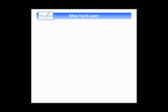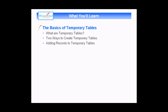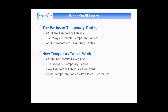We'll begin this session with a quick explanation of what temporary tables are. We'll then move on and show you two ways that you can use to create a temporary table and how you can add records to a table that you've just created. Once we've covered the basics we'll move on and show you a few of the more technical details of how temporary tables work. We'll show you where you can find a temporary table that you've created. We'll explain the scope of a temporary table and how you can extend it by using something called global temporary tables. We'll show you a couple of methods for getting temporary tables to be removed from a database and finally we'll explain how temporary tables work when you're using stored procedures as well.